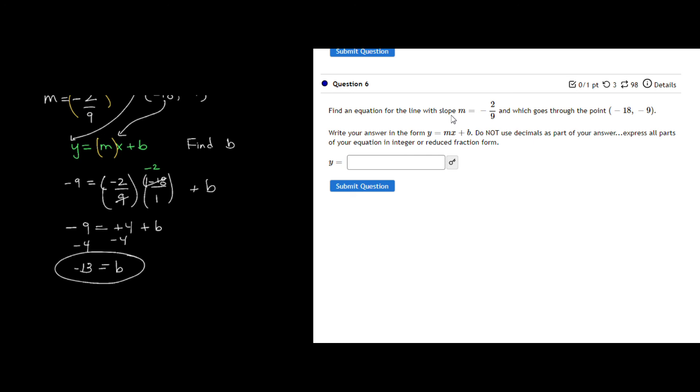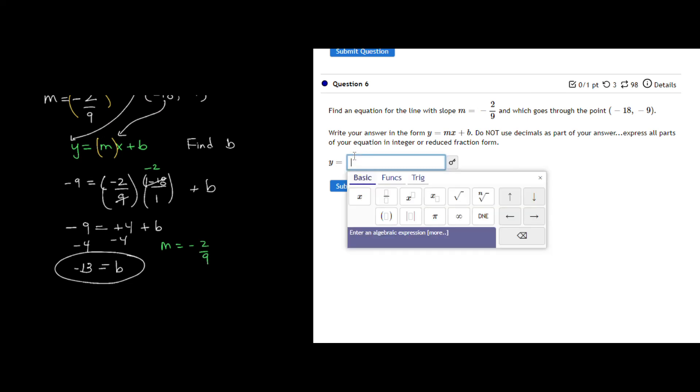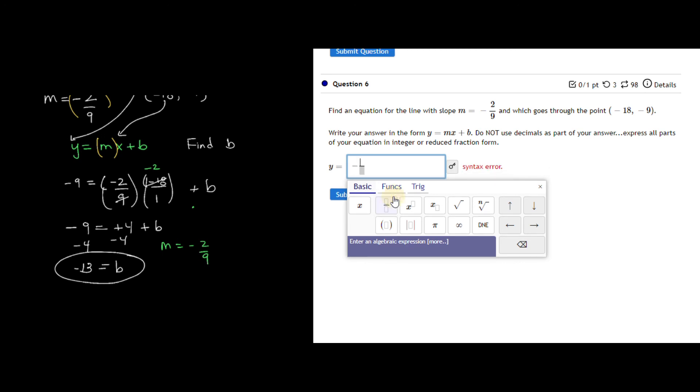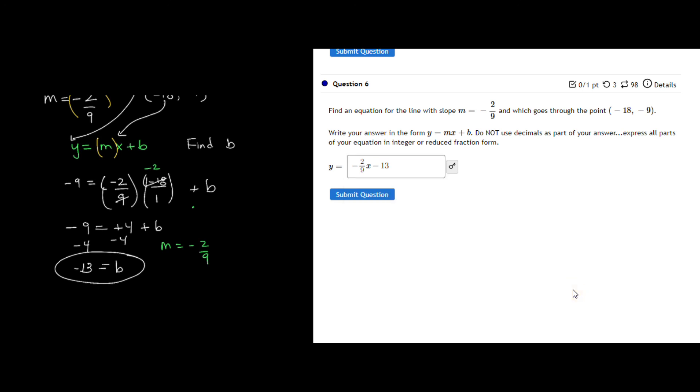So that is what we're looking for. We are given the fact that m was equal to negative 2 over 9. So when you're plugging this in, just make sure you use fractions and not decimals. So it's going to be y is equal to negative fraction 2 over 9. Make sure you put the x value and then I am subtracting 13 from that. And that's all we need to do with these questions.